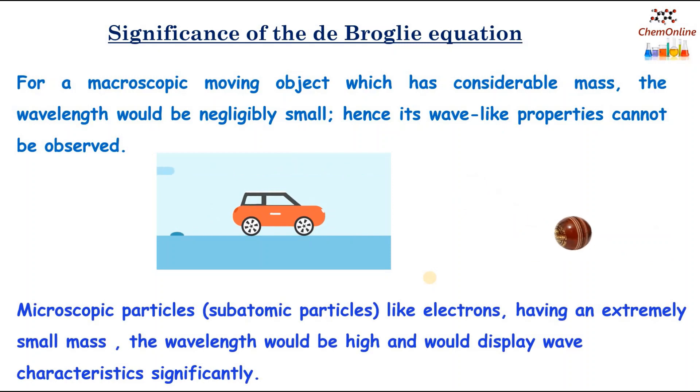But, microscopic particles or subatomic particles like electrons, they have very small mass. That means, their wavelength would be high. And hence, they would display wave characteristics significantly. So, the de Broglie equation has great significance when we deal with microscopic particles or subatomic particles like electrons, protons, etc.